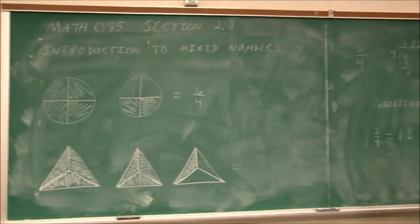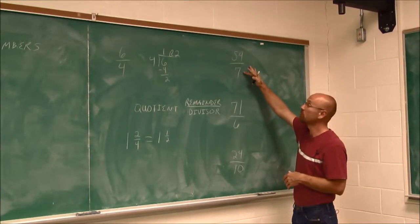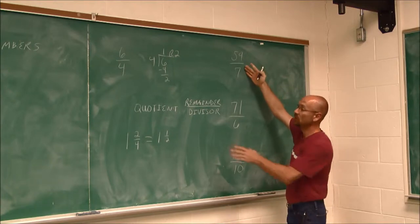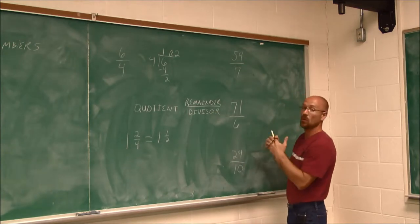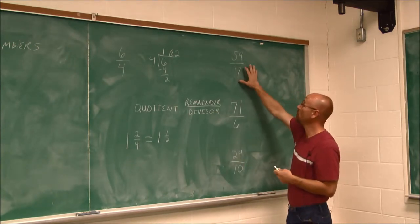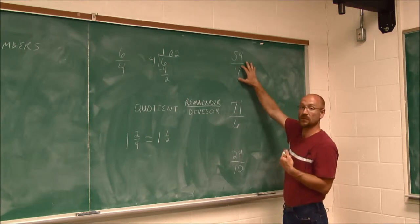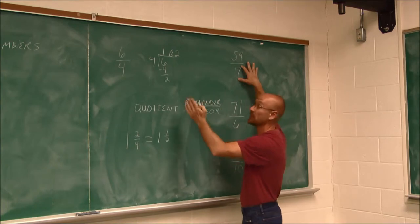All right, let's take a look at a few more examples. Here we have 59 sevenths. Well, to do this, to write it as a quotient and the remainder over the divisor, we could do the division. But I'm going to show you a shorthand way. One way to do it is to just think what we did here, what times 4 gets me close to 6? Well, 1 without going over.